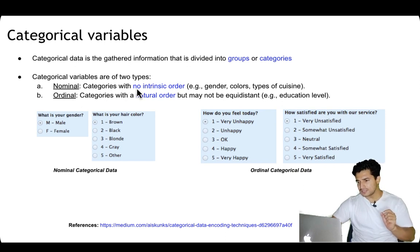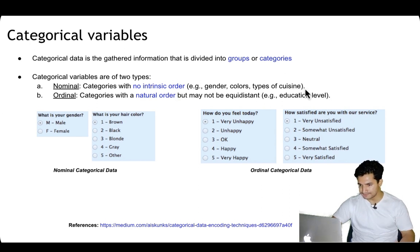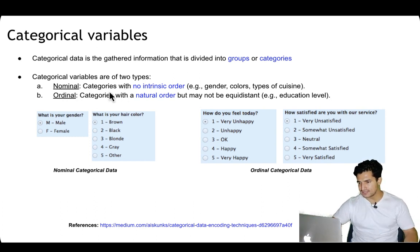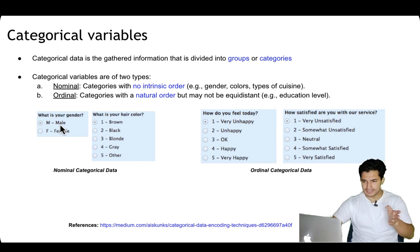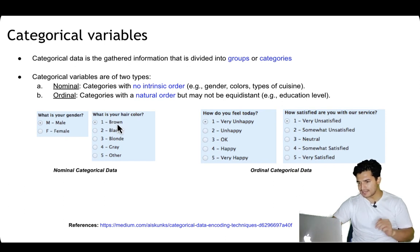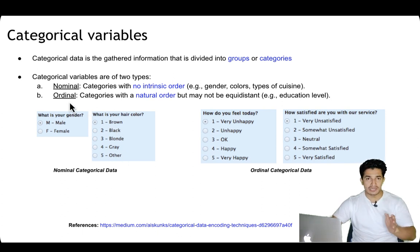In nominal categorical data, the categories have no intrinsic order. For example, gender, color, types of cuisines, and so on. Gender can be male or female — there is no order to it, you can't say one is better than another. Similarly, hair color can be brown, black, blonde, gray, or other — there is no ordering here.